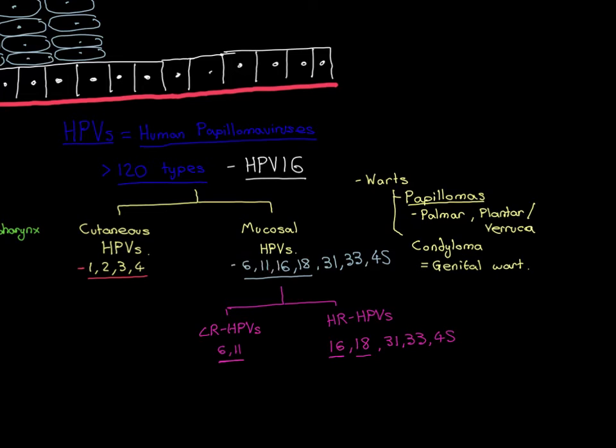Since non-keratinised squamous stratified epithelium is also called mucosal squamous stratified epithelium, we call these the mucosal HPVs. The next topic I want to talk about is the structure of human papillomaviruses, and the structure is going to be pretty much the same for all the different 120-plus types.